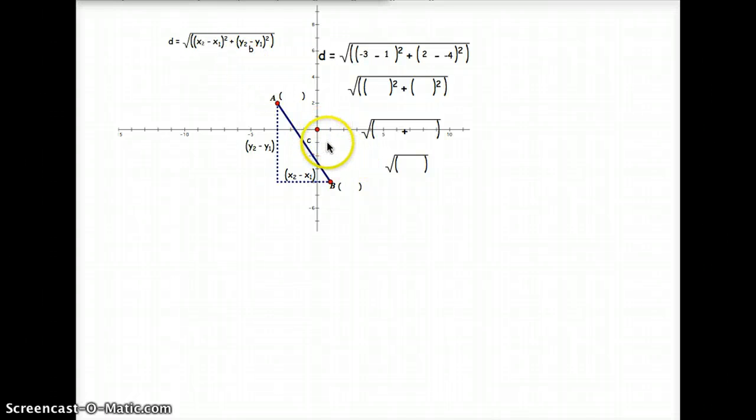And our y value is 1, 2, 3, 4 down. So minus negative 4. Now I notice a lot of you, especially coming up from the middle schools, are keeping your double signage. Go ahead and eliminate that double signage as possible and turn that into a positive if you can.